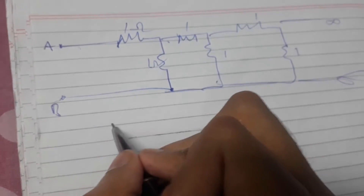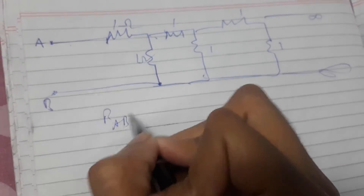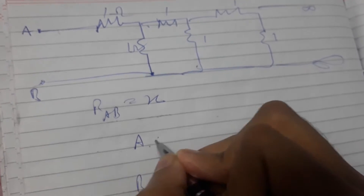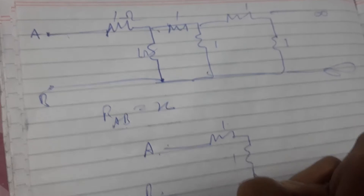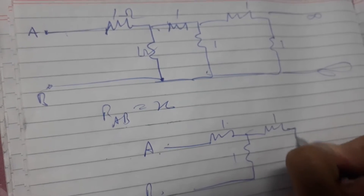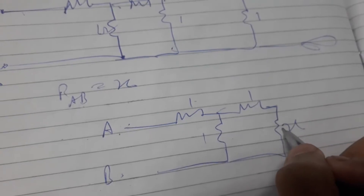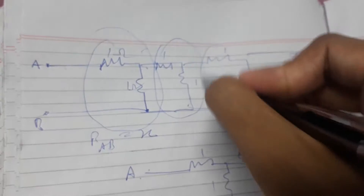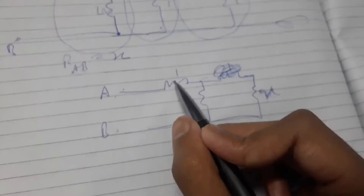If we assume X is the equivalent resistance, notice that removing the first two 1-ohm resistors from an infinite chain leaves us with the same infinite chain — still X. This is the same logic as the ocean: if you take out one bucket of water, the ocean remains an ocean. The difference is negligible.